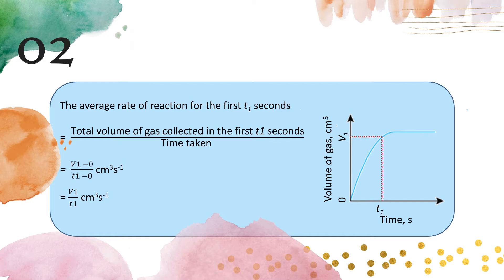The second method is the average rate of reaction for the first certain time. You take the total volume of gas collected. If you are asked to determine the rate of reaction for T1, the total volume at T1 is V1. So the average rate of reaction for the first T1 seconds equals V1 over T1. The unit, if the volume of gas is in centimeter cube, is centimeter cube per second.